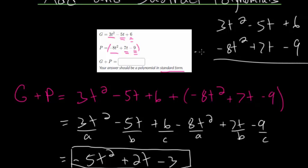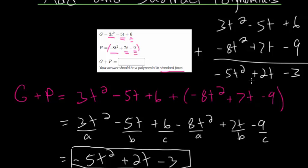When we add these by columns, we're going straight down. 6 minus 9 is minus 3. Minus 5t plus 2t is plus 2t. And 3t squared minus 8t squared is minus 5t squared. So you get the same answer, just with a slightly different methodology.